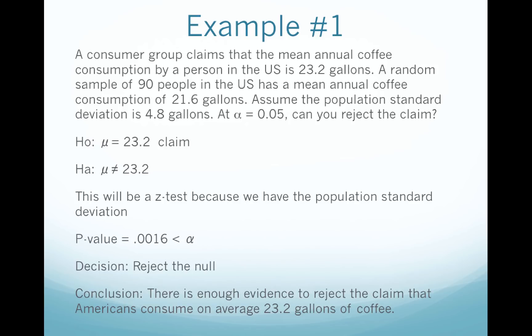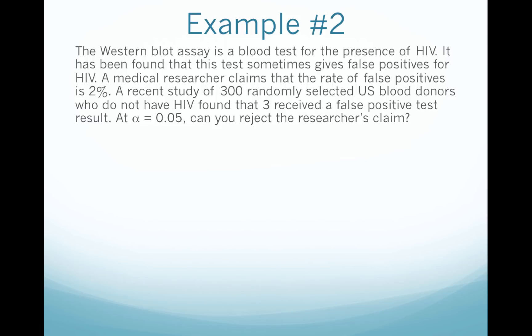Example 2. The Western blot assay is a blood test for the presence of HIV, and it sometimes gives false positives. A medical researcher claims that the rate of false positives is 2%. A recent study of 300 randomly selected U.S. blood donors who do not have HIV found that 3% received a false positive test result. At alpha equals .05, can you reject the researcher's claim? We start with the null and alternative. The claim is that the rate of false positives is 2%, so we have rho equals .02. Because it's equals, it is the null, and because we're reading it, it is the claim.